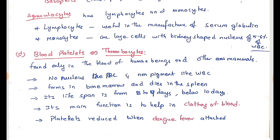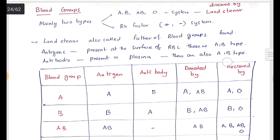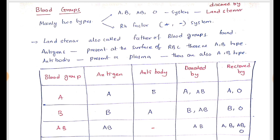Now we will see some blood groups. Blood groups were mainly discovered by Landsteiner. They are mainly divided into A group, B group, AB group, and O group. We can also classify blood into RH factor positive and RH factor negative, which we will see later.